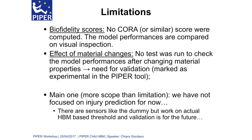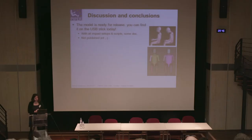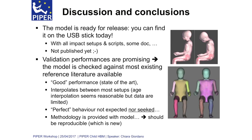The main limitation — which is more a limitation of scope — is that we have not focused on injury prediction, at least for now. We have implemented sensors in the model to mimic those in dummies: accelerometers for the head, thorax, and pelvis; chest deflection measurement; and force and moment sections on the spine. But we did not focus on injury prediction, which opens the future possibility of calculating injury thresholds based on HBM. The model is ready for release and can be found on the USB stick given at the end of the workshop. Together with the model, we provide all impact setups for validation, all the scripts, and some documentation. The model has not been published yet, but we are working hard on that — please cite us if you use it.